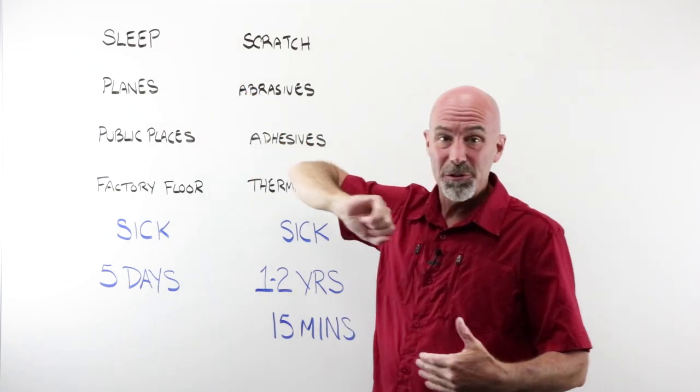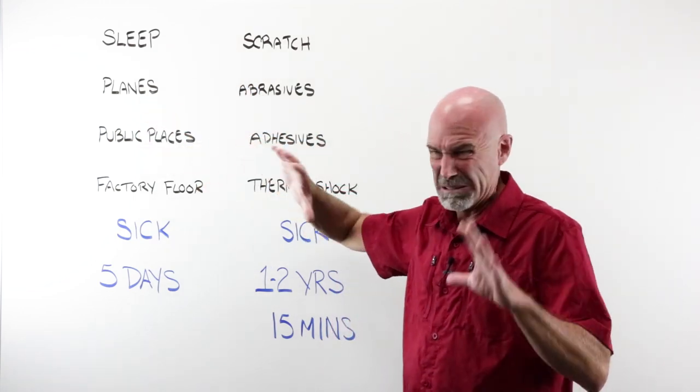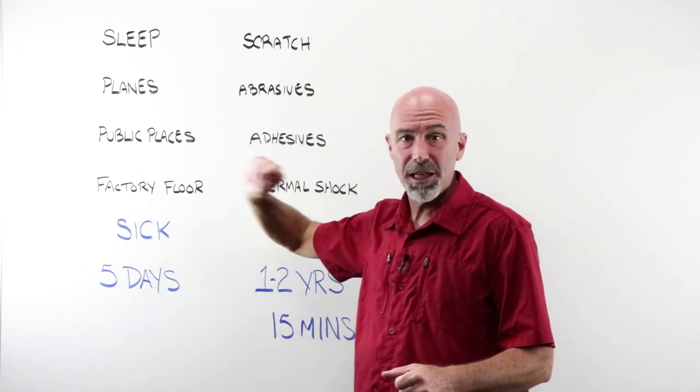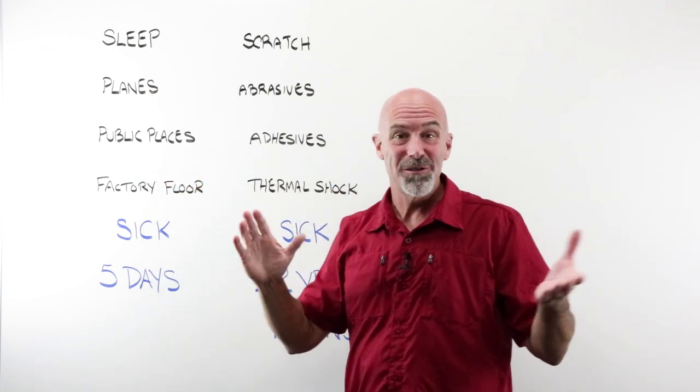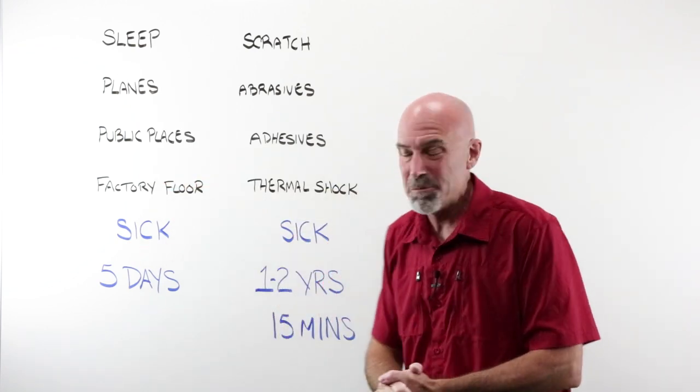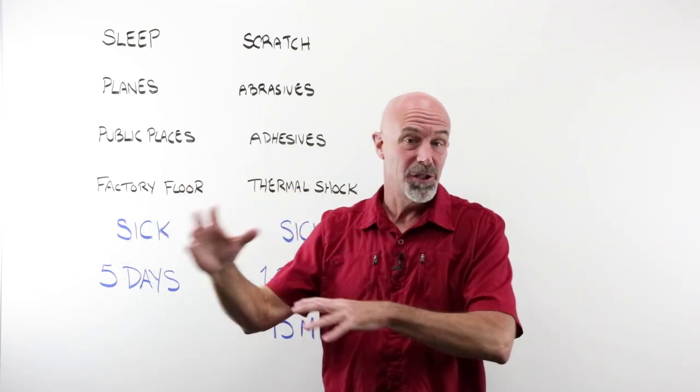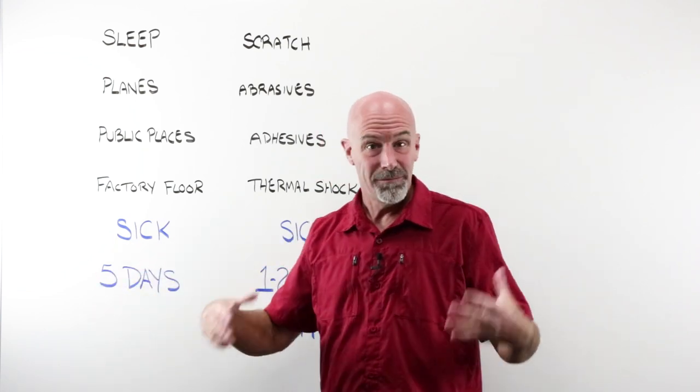I had my sleep cycle interrupted. I was in airports and planes. I was in all kinds of public places. I went out to eat. I went to the Y and worked out. We were at the Iowa State Fair. Fifty thousand other people were there. I was on the factory floor shaking hands, touching all the equipment that other people were using. After about five days, I was sick.